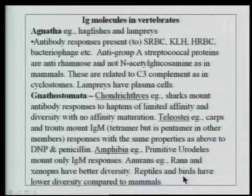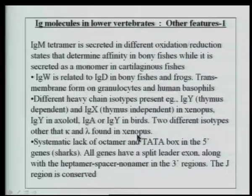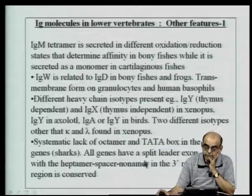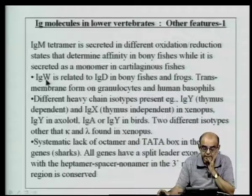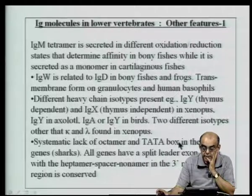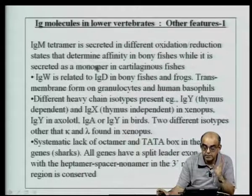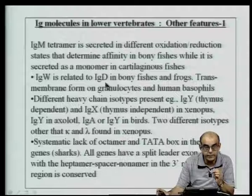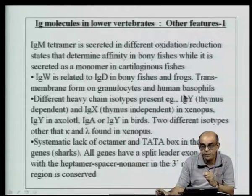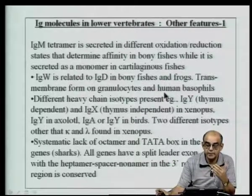Coming on to reptiles and birds, they have a more advanced immune system, but their diversity is lower compared to the mammalian immune system. There is a molecule called IgW, related to IgD in mammals, present in bony fishes and frogs. IgW is found on granulocytes, and because of these studies finding IgW related to IgD, researchers discovered that IgD is actually a membrane molecule on human basophils. These studies were made possible by finding IgW on granulocytes in frogs.